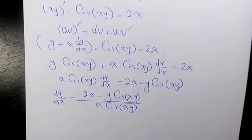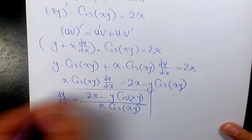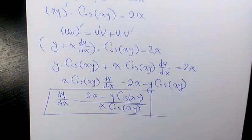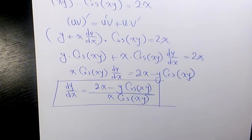So basically that's going to be the final answer. This is the first derivative of sine xy equals x squared minus 3 using implicit differentiation.